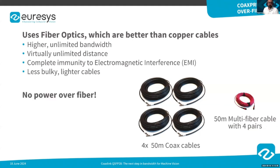They are completely immune to electromagnetic interference, and are less bulky and lighter than coax cables. The drawback of fiber is that we cannot power the camera via fiber, which we could do with coax cables.